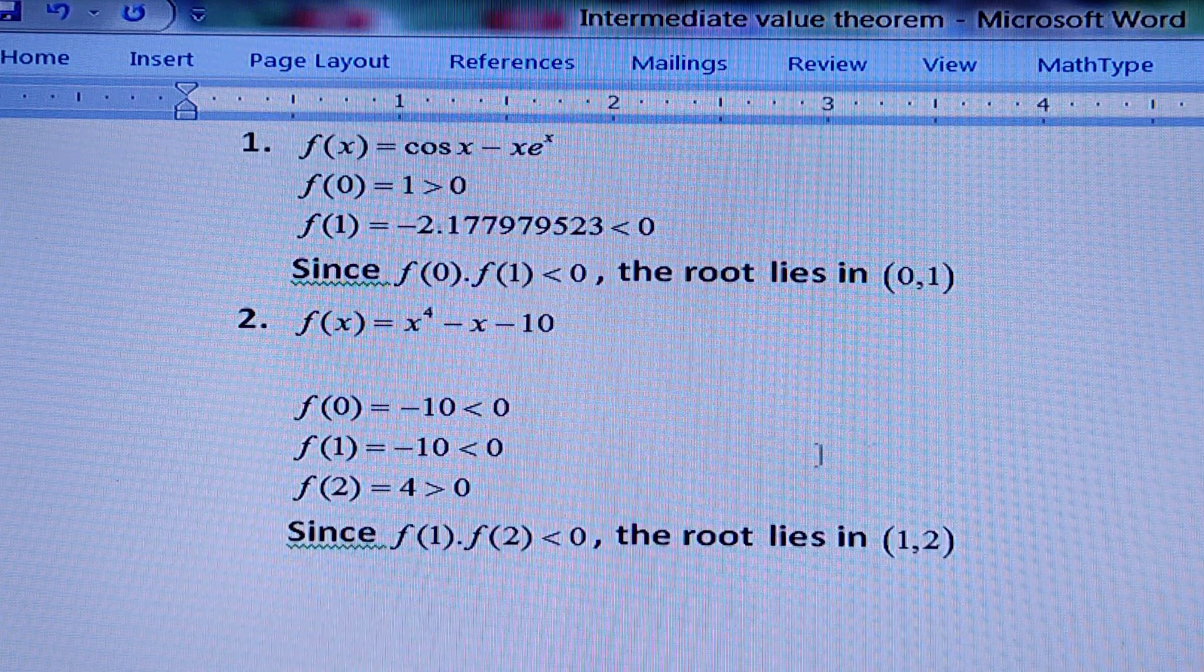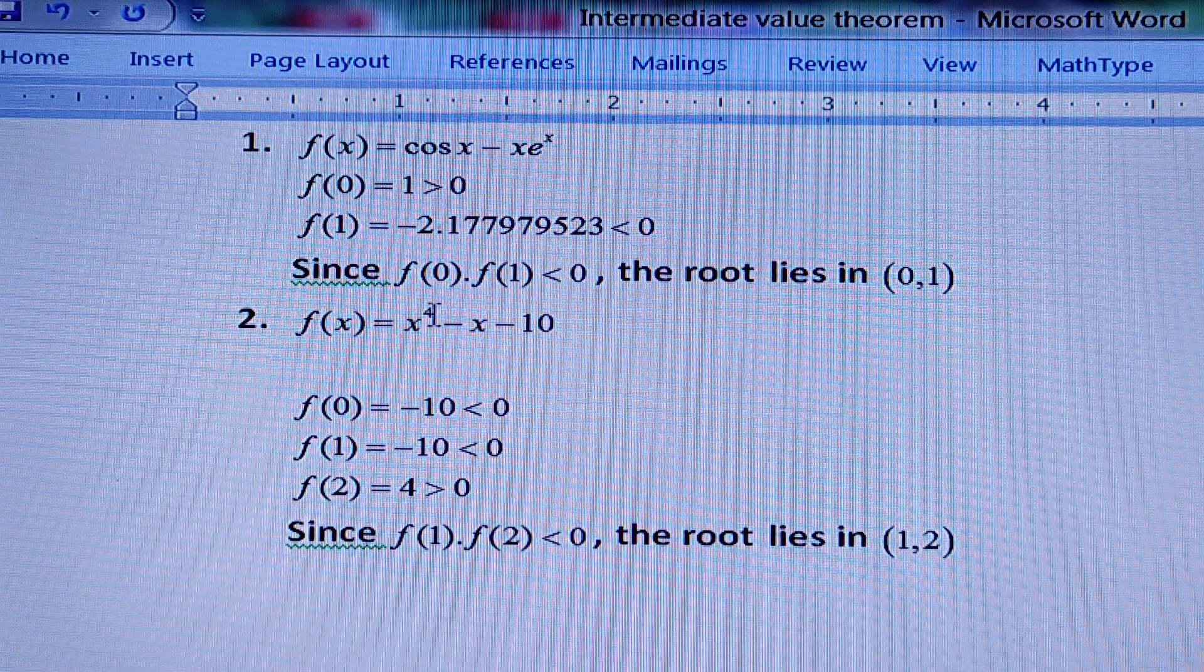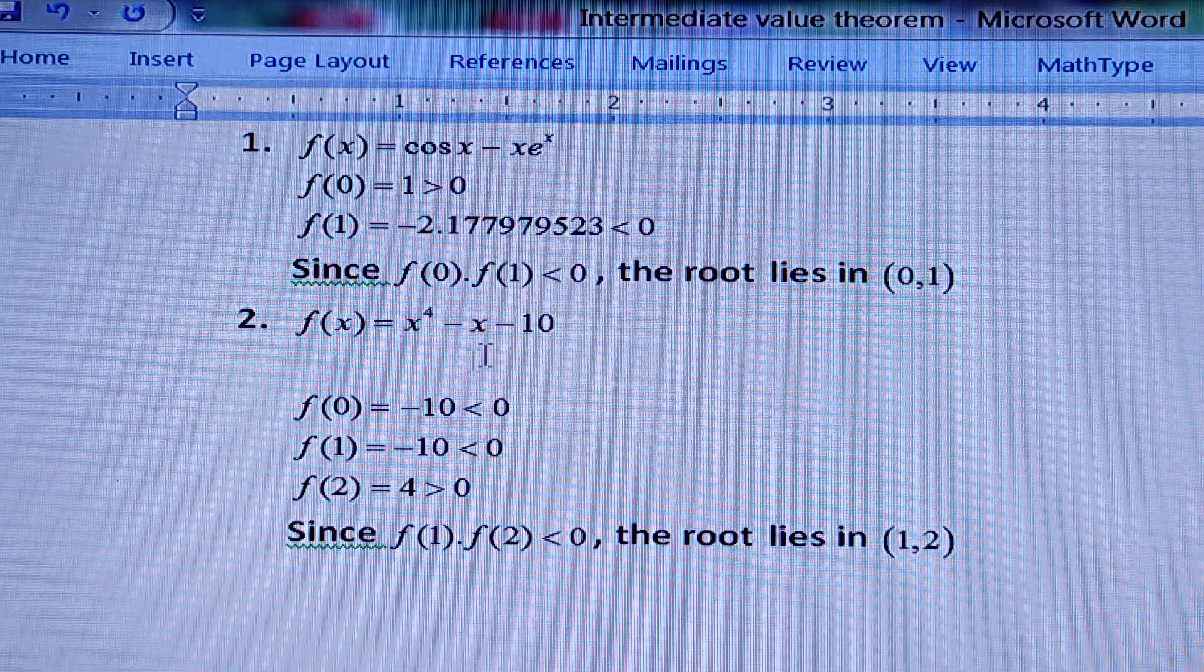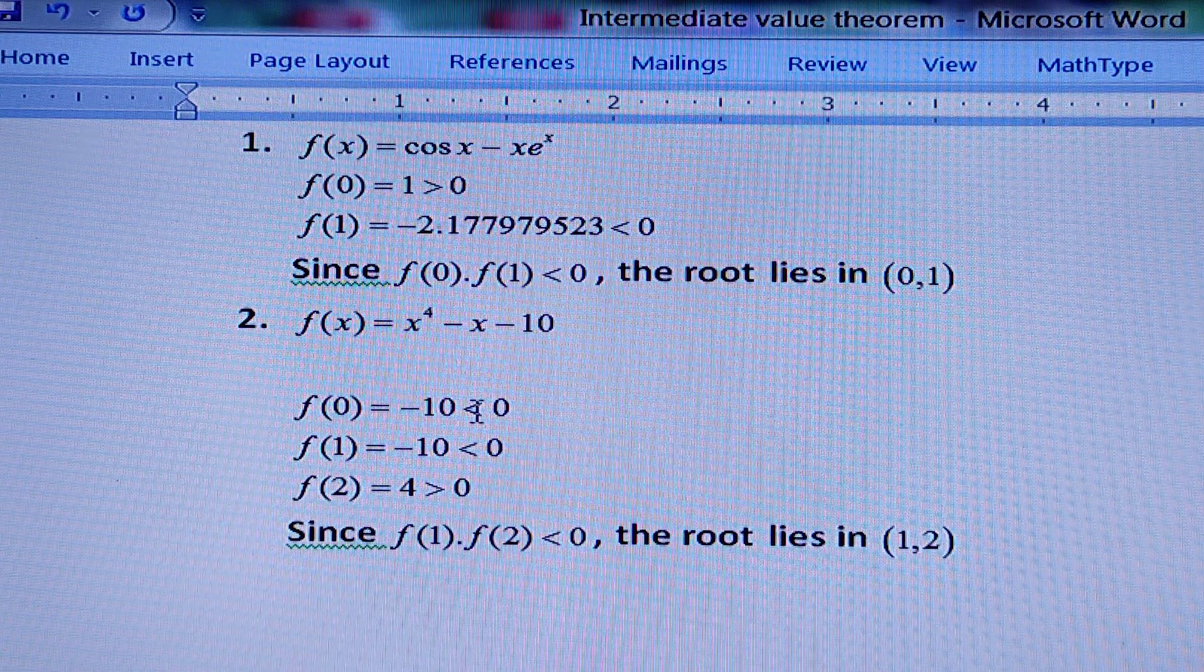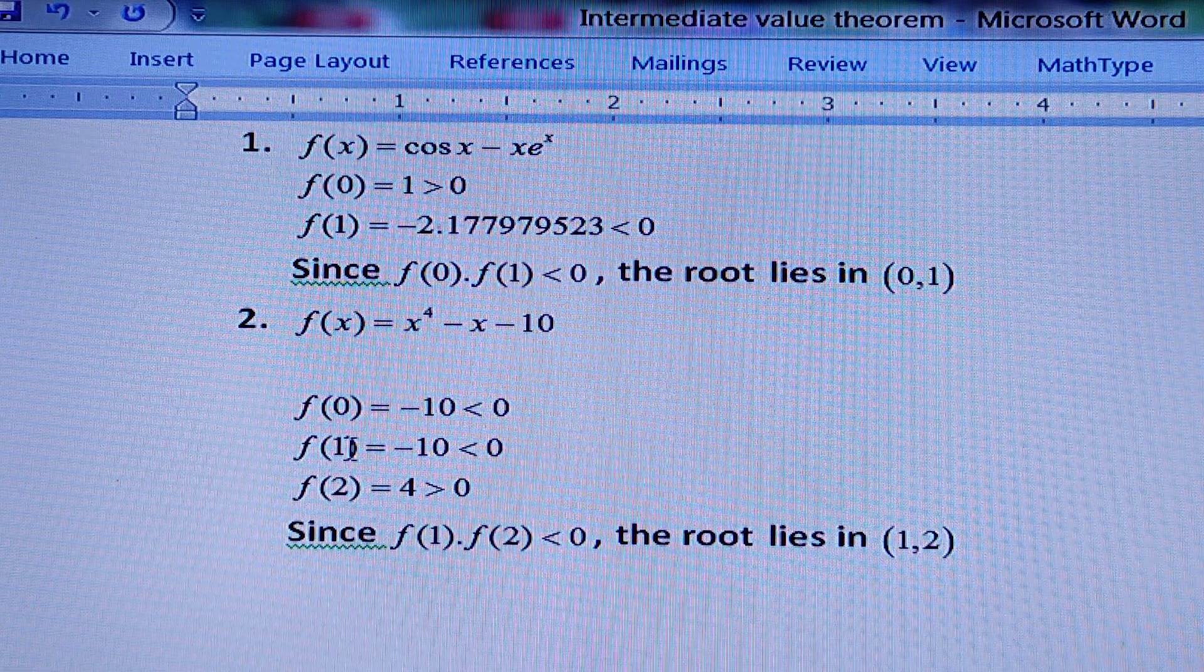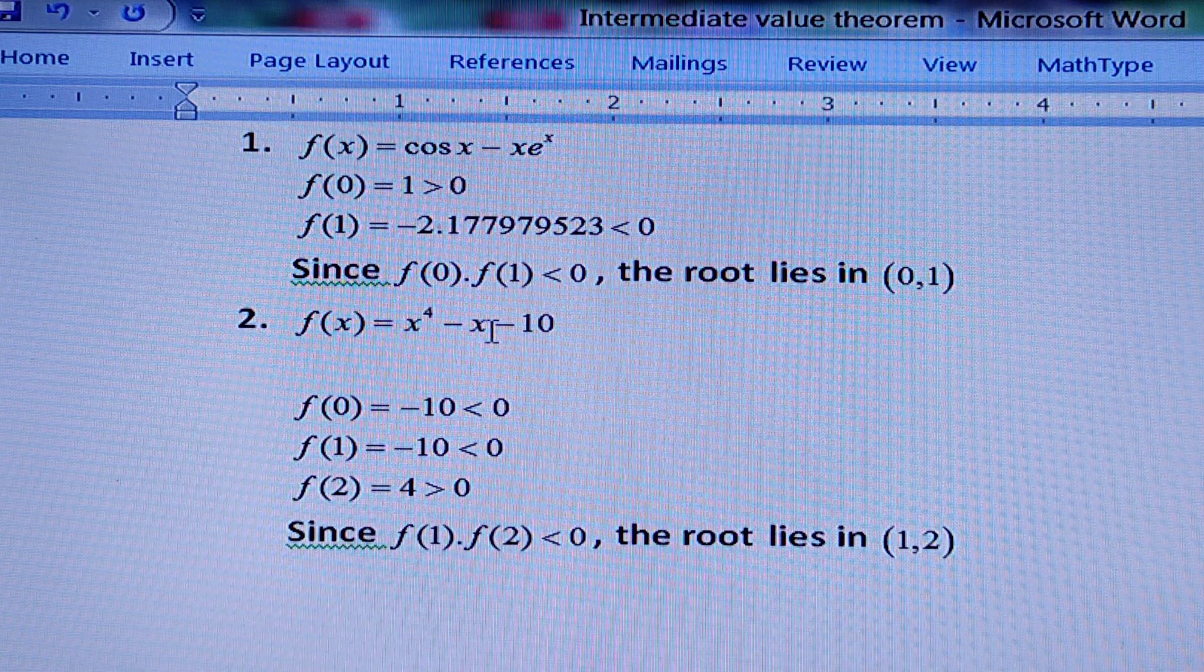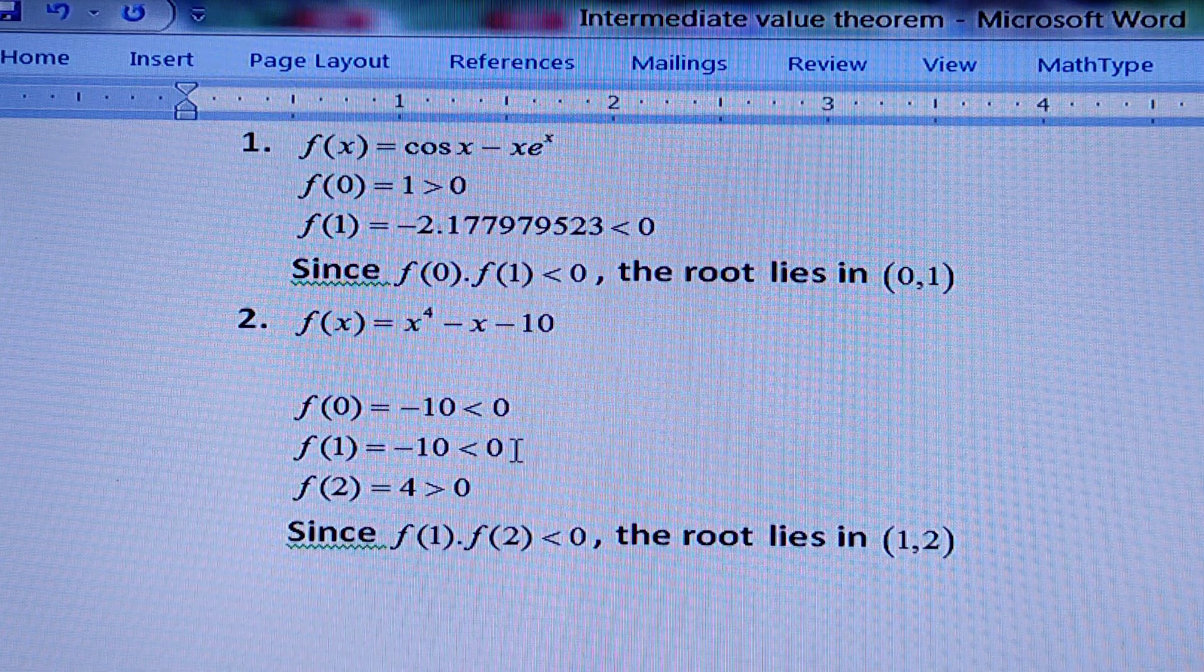Let us see another example. f(x) = x^4 - x - 10. Here f(0), if we put x = 0, then you will get -10, which is less than 0. Put x = 1, f(1) - that means these cancel out - again -10, less than 0.